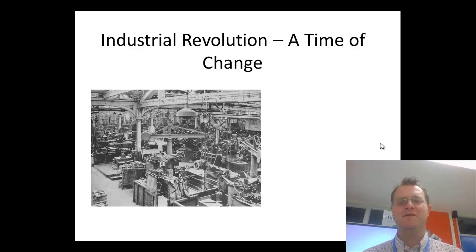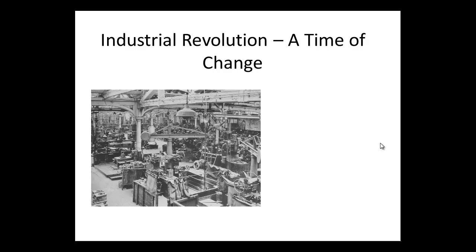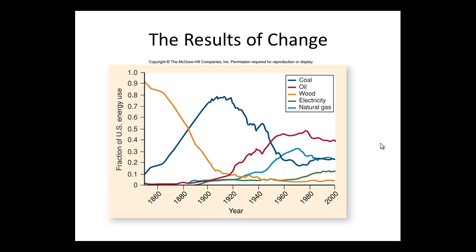So let's think about the Industrial Revolution as a time of change, and straight away let's consider it looking at fuel usage. Now, as we can see, pre-Industrial Revolution, the Western world — particularly thinking of the United Kingdom and the US as well — the majority of energy was released from burning wood. We had a very rural economy and agriculture was king.